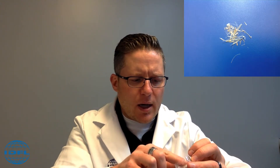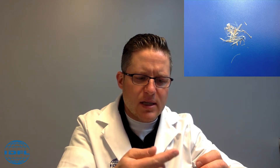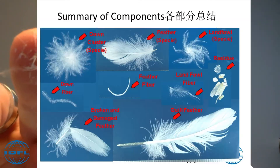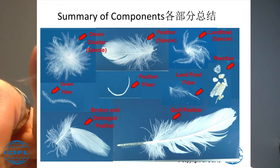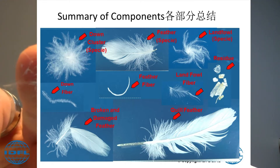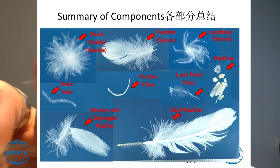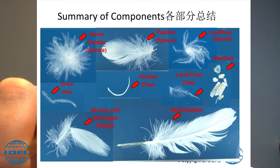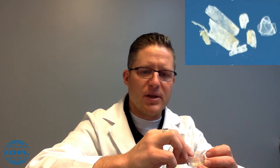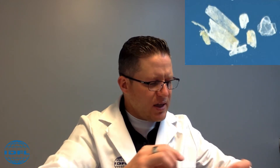The very last thing is this little cup here — this is actually known as residue. The residue is basically anything else that is not identified as down, down fiber, feather, feather fiber, broken and damaged feathers, quill feathers, or landfowl. So here you can actually see there's just a little bit of residue right there. This is kind of a quick overview of each one of your components.